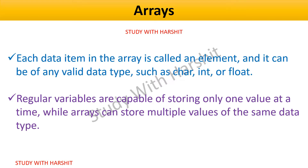Arrays allow you to store multiple values of the same data type in a single variable. Each value in an array is called an element, and you can access and manipulate each element using its index. The data type of each element can be any valid data type such as char, int, or float.